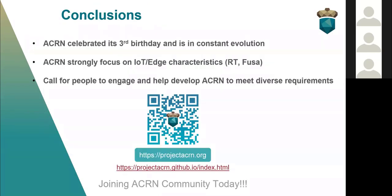Here comes the conclusions. First, ACRN has already been created for three years and celebrated its birthday this year. ACRN continues its constant evolution for different requirements support and new feature support. Second, ACRN strongly focuses on IoT and edge characteristics, for example real-time and functional safety usage. We also call for people to engage and help develop ACRN to meet these requirements. You can scan the QR code here to join us.